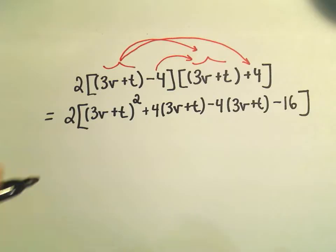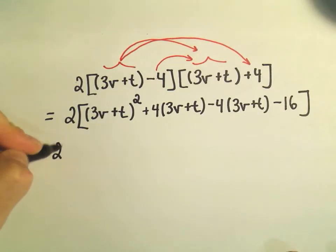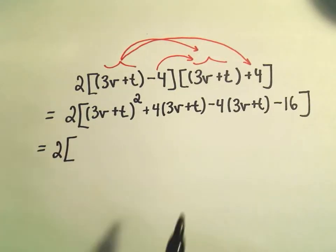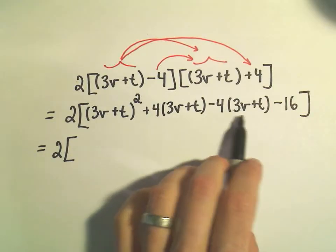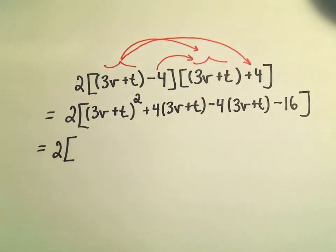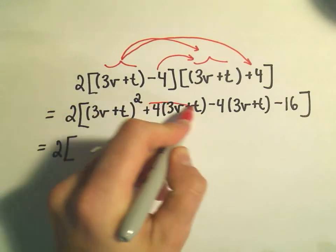Okay, so now I'm going to do a couple things. One thing I'm going to recognize is notice we have positive 4 times 3v plus t and a negative 4 times 3v plus t. So those would simply cancel out.